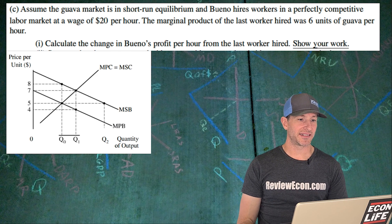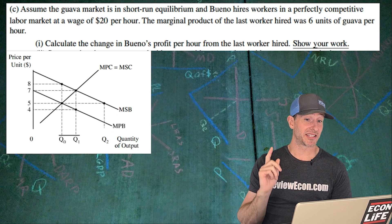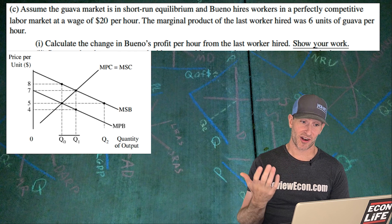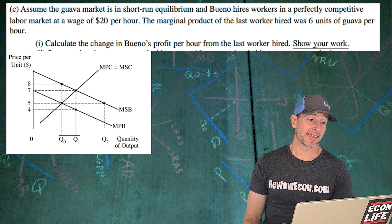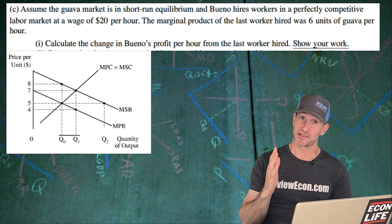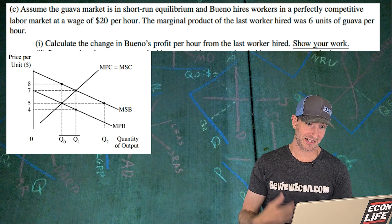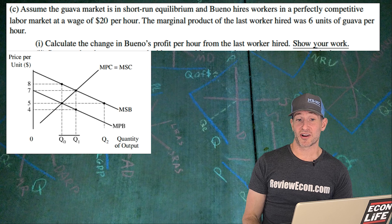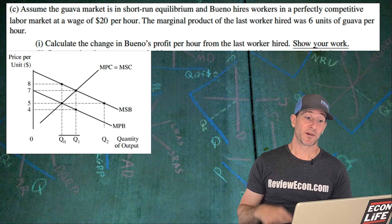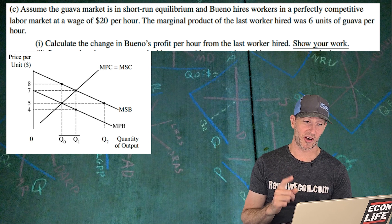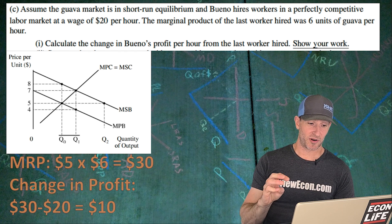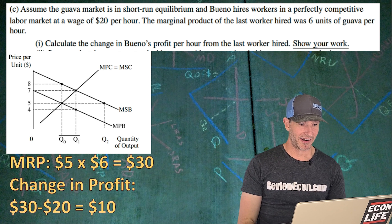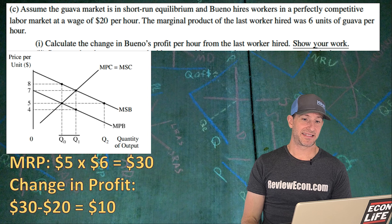For C, assume that the market is in short run equilibrium and this firm is going to... actually the firm of Bueno hires workers in a perfectly competitive market. The wage is $20 an hour. That means that's the marginal resource cost here essentially. And the marginal product of the last worker hired was six units. We're going to calculate the change in the profit. So as we can see there, the market price is going to be $5 there.